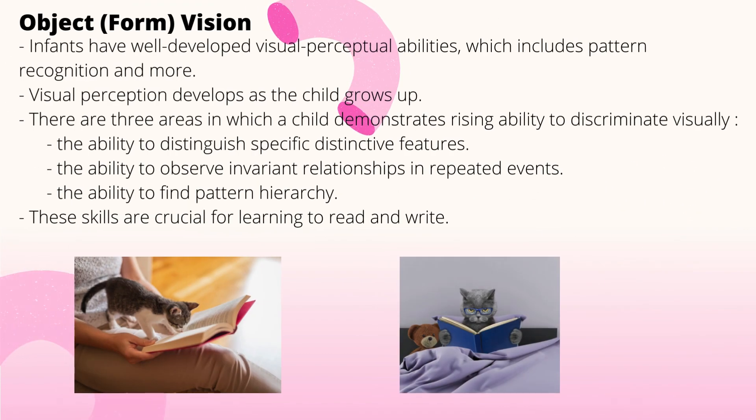Under visual perceptual function, there is a type of vision called object vision, also known as form vision, in which infants have well-developed visual perceptual abilities. This includes pattern recognition, which actually happens long before infants can manipulate objects or move around space. Visual perception develops as a child grows up, with most developmental changes taking place by four to nine years of age. However, children vary in the rate at which they acquire perceptual ability, depending on their capability.